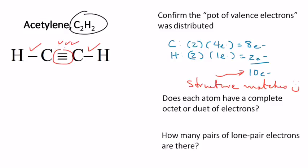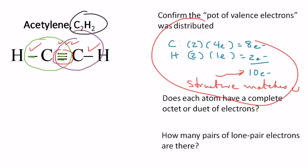Does each element have a complete octet? Let's take this left carbon and draw a circle around it. I got two, four, six, eight. It does have a complete octet. And let's draw a circle around the other carbon, the right carbon. I'm liking two, four, six, eight. So, it has eight. And, of course, the hydrogens have a duet.